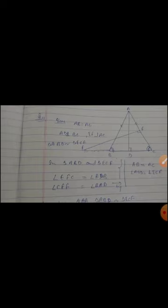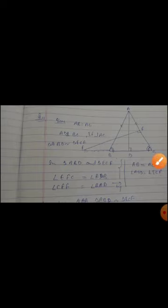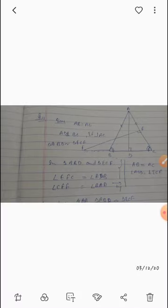In both triangles, angle EFC and angle ADB are each 90 degrees. Since AB is equal to AC, angle B is equal to angle C. So we have two angles equal, and by the Angle-Angle similarity criteria, triangle ABD is similar to triangle ECF.